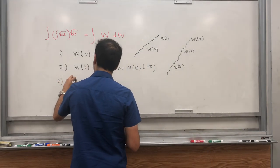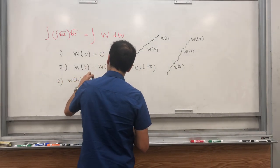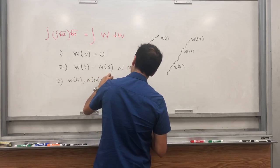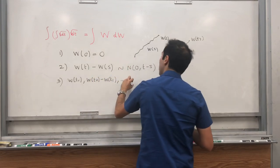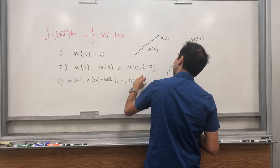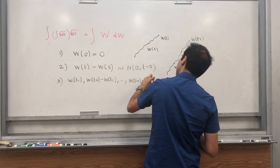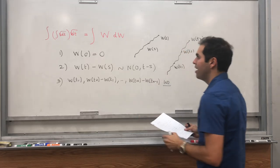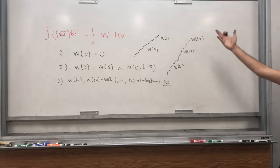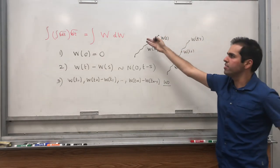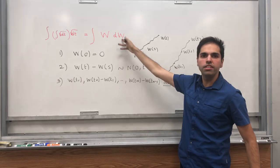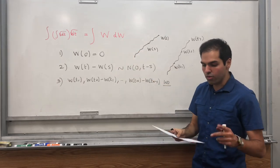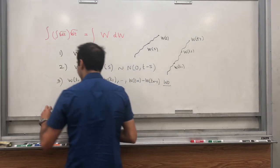And lastly, we have sort of a memoryless property. So if you go up to w_{t1}, then w_{t2}, then w_{t3} — at w_{t1} you don't remember what happened. So basically, all those increments are independent: w_{t1}, w_{t2} minus w_{t1}, up to w_{tn} minus w_{t(n-1)} are independent. And our goal today is to integrate w dw, and the way we will do this is with a Riemann sum.